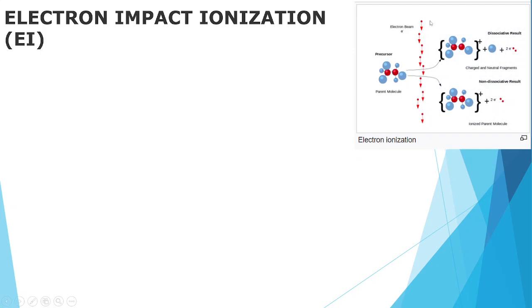This is how ionization happens. The parent molecule is bombarded with an electron beam, so dissociative ionization can happen or non-dissociative ionization can happen. Result of dissociative ionization is charged molecules and neutral fragments, and these electrons are coming from here. The second is non-dissociative which results in ionized parent molecule. The entire parent molecule gets ionized but electrons are released. So these are two varieties of ionization that happen by electron impact ionization method.